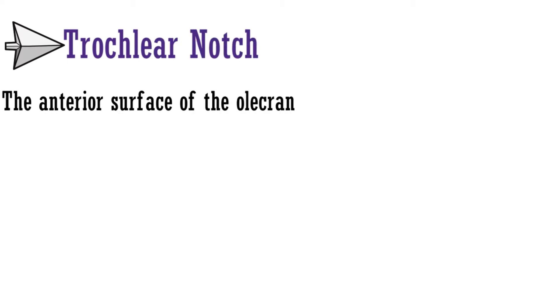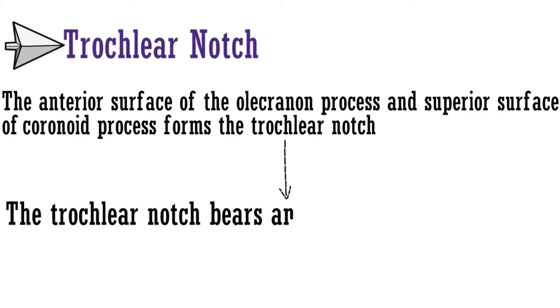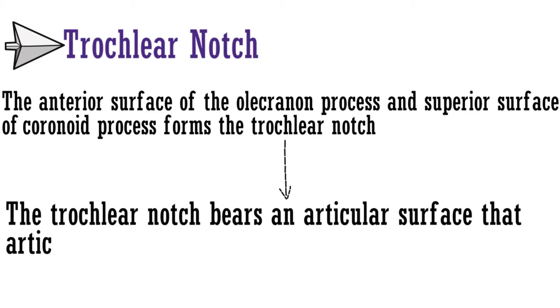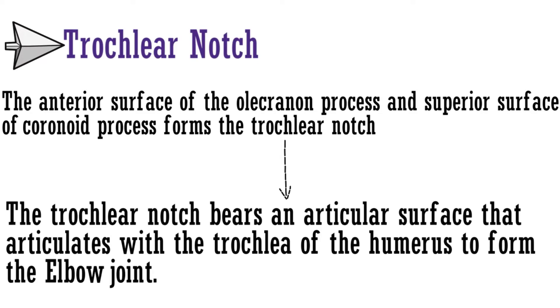The last structure in the proximal end is the trochlear notch. The anterior surface of the olecranon process and the superior surface of the coronoid process together form the trochlear notch. The trochlear notch bears an articular surface that articulates with the trochlea of the humerus to form the elbow joint.